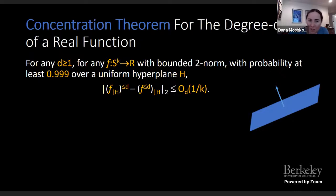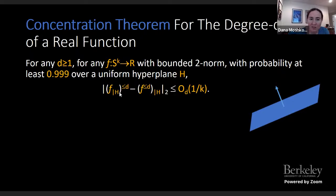Suppose you have some functions — real functions with some constant degree. You take the space and consider a random hyperplane in this space (dimension one less than the total dimension). You can look at the function restricted to the hyperplane and ask what's the degree-D part. Just like there is Fourier analysis over the Boolean hypercube, you can also have Hermite expansion over Gaussian space or Gegenbauer expansion over the sphere.